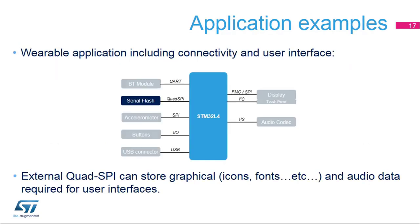Wearable applications require low power management functions together with a high-quality user interface. This can be achieved using the STM32L4's Quad SPI interface to store in an external flash memory all the graphical content needed, including background images, high-resolution icons, or fonts to support multiple languages. Additional audio data for ringtones can also benefit from the large space offered by an external flash memory. The low pin count needed to drive such devices allows for a highly optimized system integration.